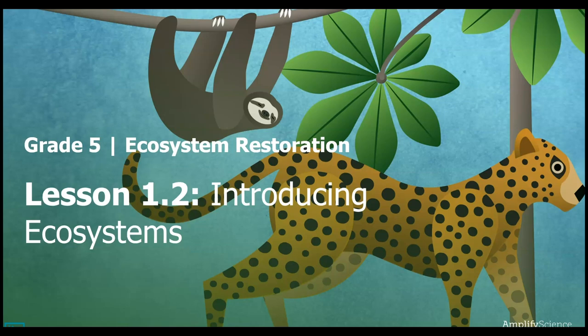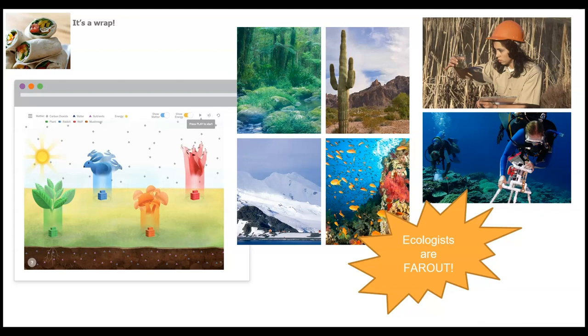In the last video, we looked at the beginning of this unit. Today we're going to look at the second lesson in the first chapter, introducing ecosystems. At our last video, we looked at the different kinds of ecosystems to think about what are in these ecosystems. Then we looked at a simulation that showed a different ecosystem and the different parts of an ecosystem.